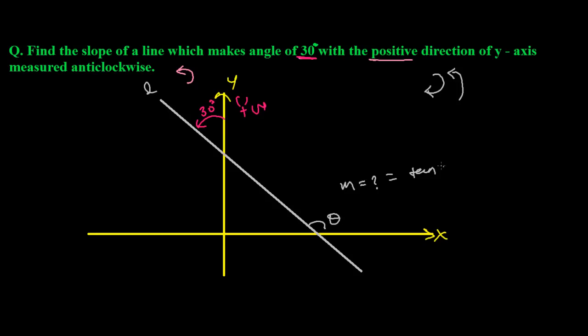So let's try to analyze this problem first. If this is 30 degrees, then this must also be 30 degrees because vertically opposite angles are equal. When the x-axis and y-axis intersect, this is 90 degrees.